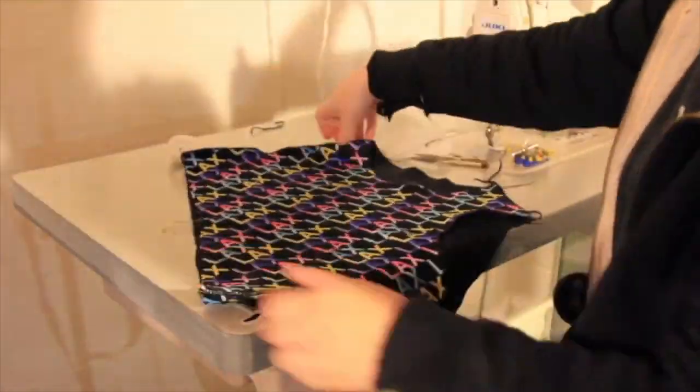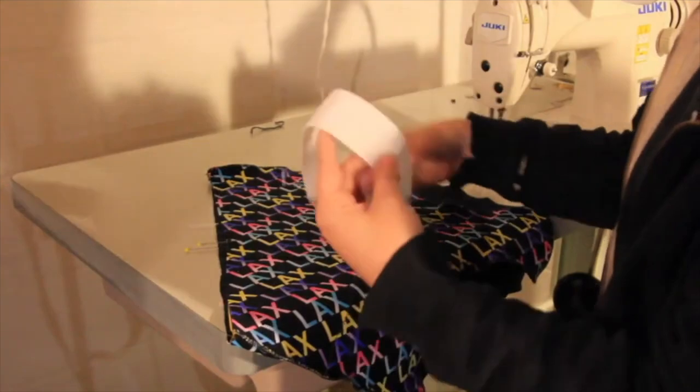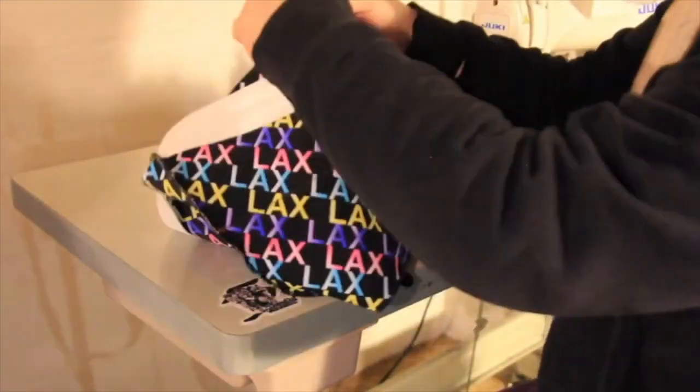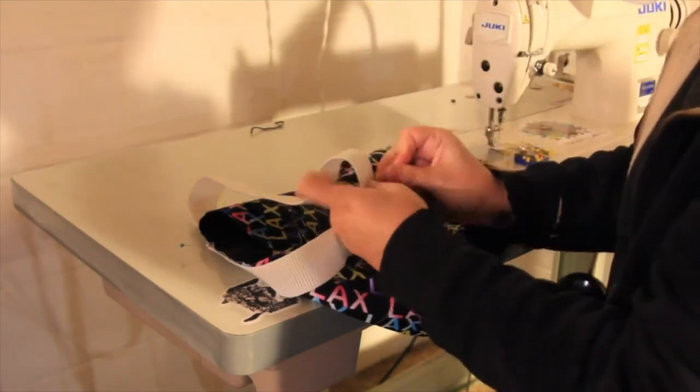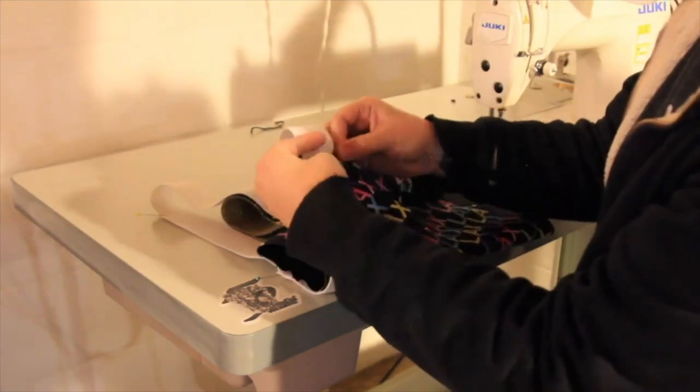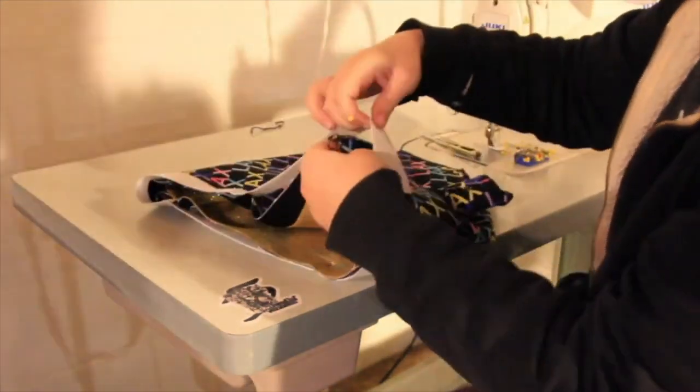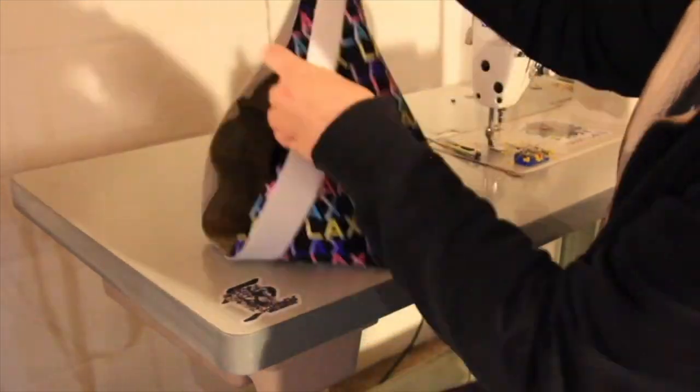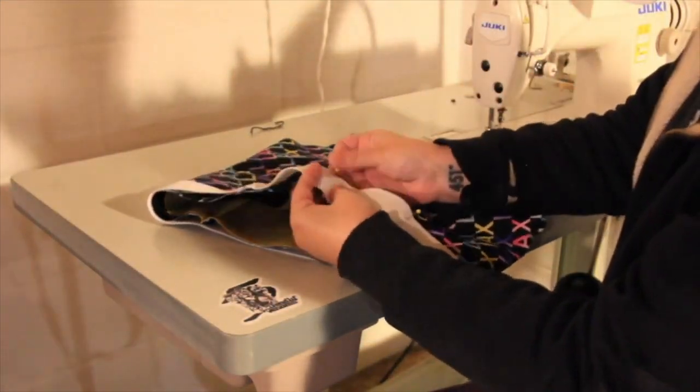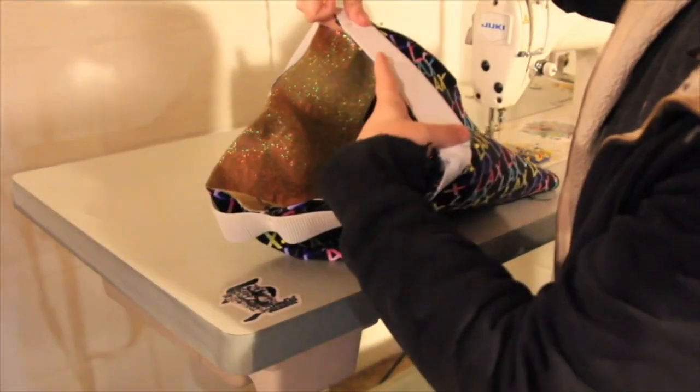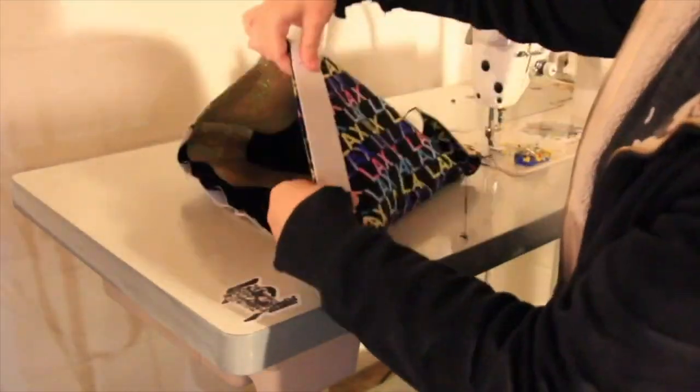We then use a technique called quartering to pin the elastic to the top inside edge of the trunks. We fold the elastic in half and half again, marking each point with a straight pin. Then, do the same to the trunks. By matching up the pins, we evenly distribute the elastic around the waistband. Next, stretch the elastic until it just touches the spandex, but the spandex isn't being overstretched. And then, place pins along the waistband as needed.